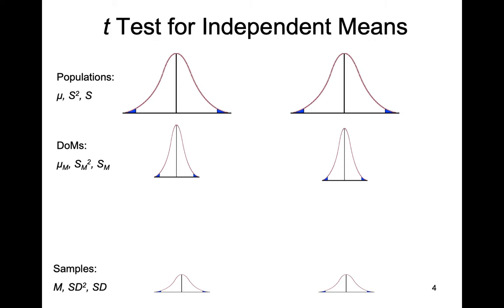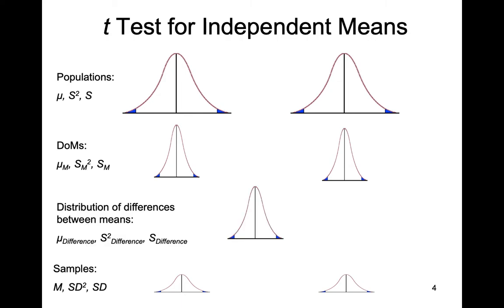The new conceptual entity with the t-test for independent means is called a distribution of differences between means. This is a hypothetical or conceptual distribution representing the difference between a mean sampled from one distribution of means and a mean sampled from the other. We randomly sample a mean from each distribution, subtract one from the other to get the difference, and repeat this over and over again. This distribution of differences between means forms the basis for our comparison distribution when doing hypothesis testing.